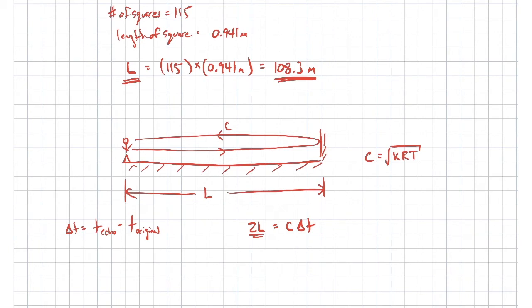The reason it's 2L is because the sound wave has to go down to the end of the hallway and then come back, so it's actually traveling a distance of 2L. We have the speed of sound times delta-T. Hopefully when we use this method, we'll end up with a length that's close to what we got from the direct measurement. Let's go ahead and see what that comes out to be.